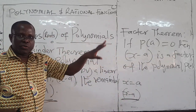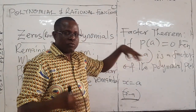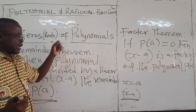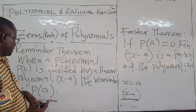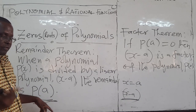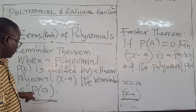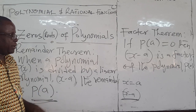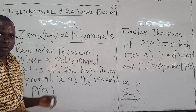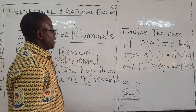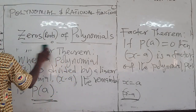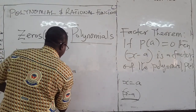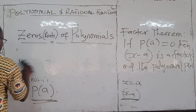But if it doesn't go to zero and you get a remainder, what is the remainder? The remainder theorem helps you find it. It says to find the remainder, simply compute P of a — whatever you get will be the remainder.